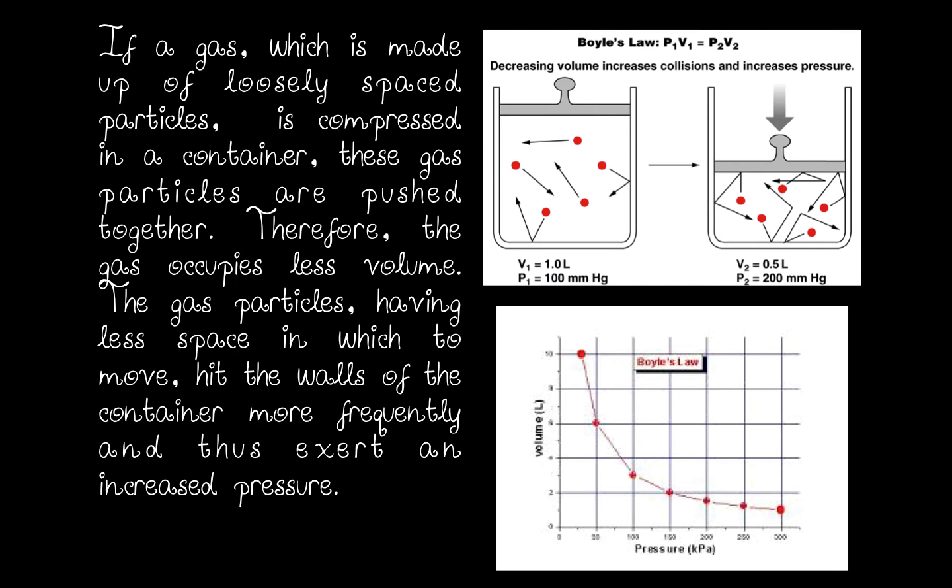This is another diagram to show the relationship of Boyle's Law: P1 times V1 equals P2 times V2. When you decrease the volume, that increases the number of collisions between the gas particles and the walls of the container, and therefore the pressure increases.